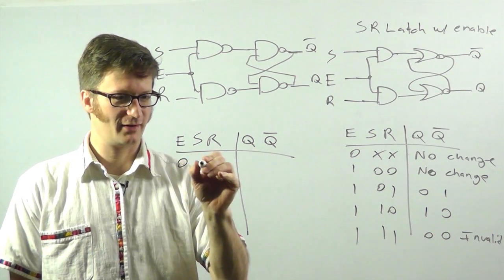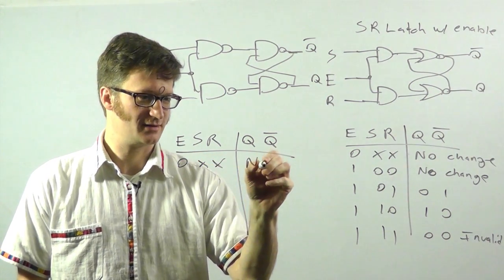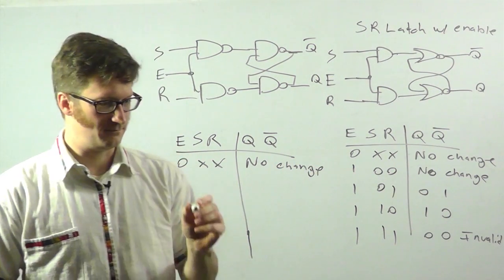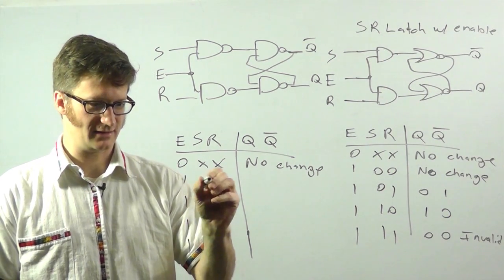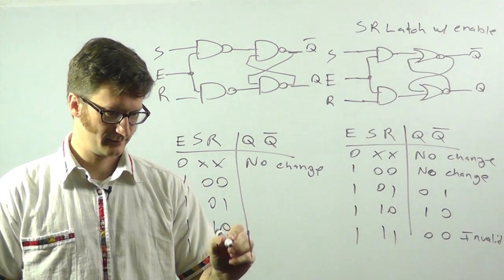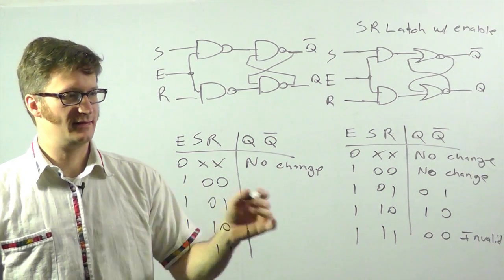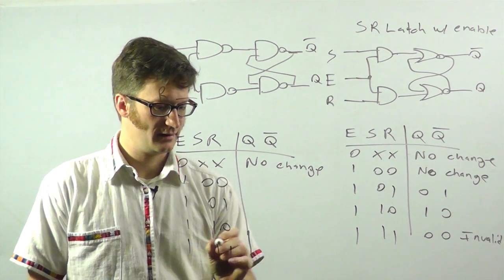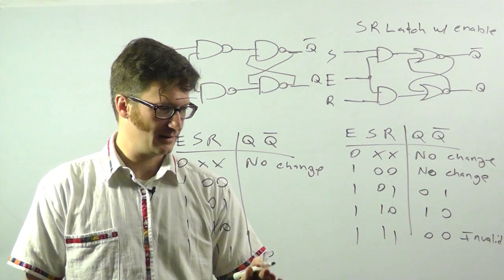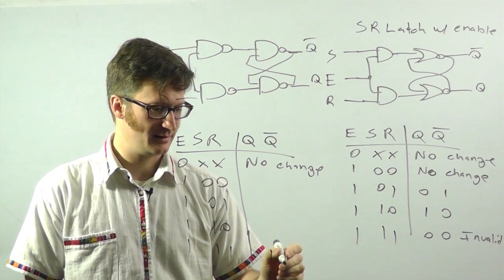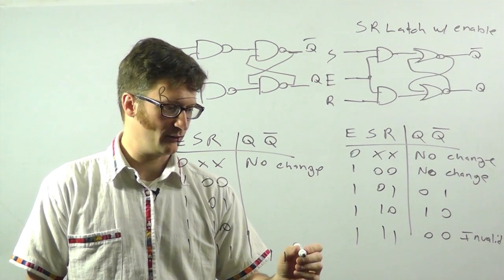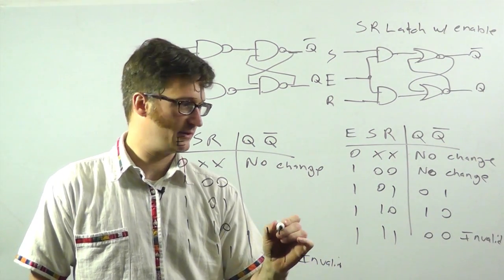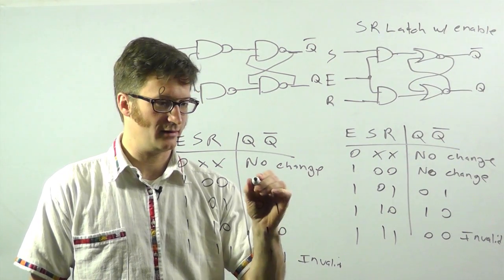With enable at 0, it doesn't matter. No change. If it's 1, we can start to have things change. This circuit works just like this circuit, except for this last state. If I have 1, 1 coming in, the output will be 1, 1, which is invalid. But otherwise, we have 1, 0, 0, 1, and no change.